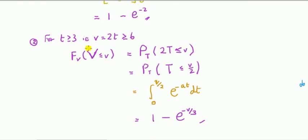Set the thing up. Big V is the random variable; little v denotes the possible value — a realization, a number. We express this in terms of the CDF of T. Since V equals 2T, we substitute here: P(V ≤ v) becomes P(2T ≤ v), which is P(T ≤ v/2). I want to get T by itself because that's the random variable — it's essentially the inverse. Then we integrate over the region T ≤ v/2.